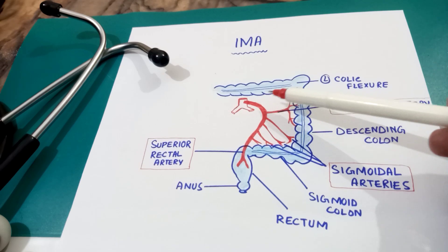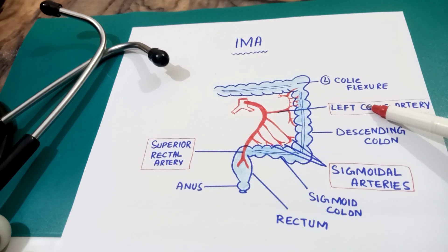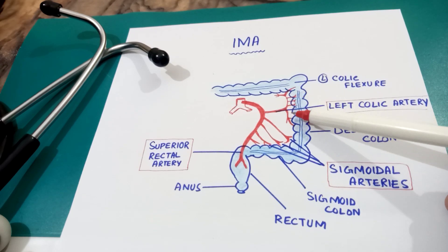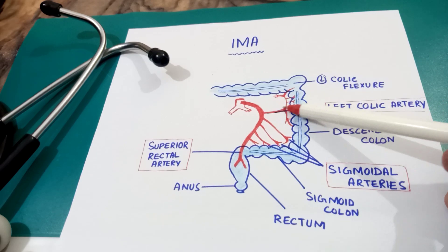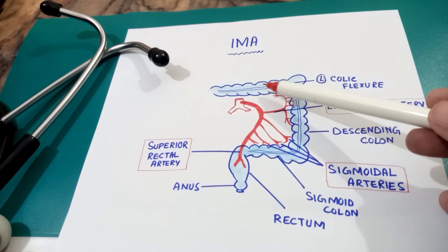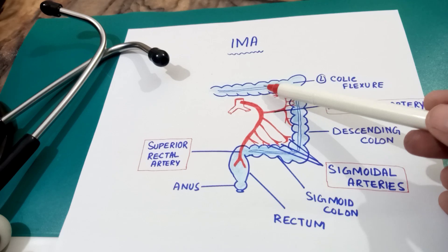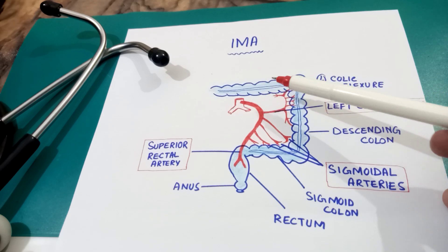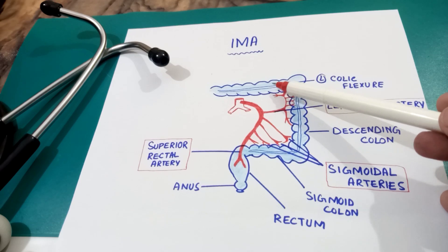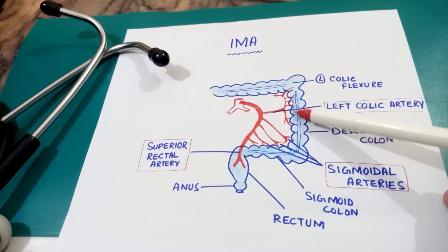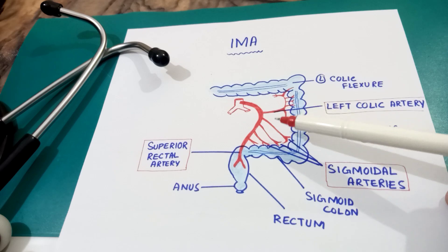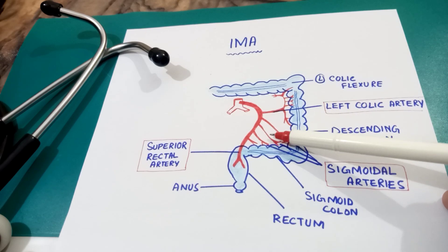The first branch given is the left colic artery, which divides into an ascending and a descending branch. The ascending branch of the left colic artery anastomoses with a branch of the superior mesenteric artery, while the descending branch of the left colic artery supplies the descending colon.